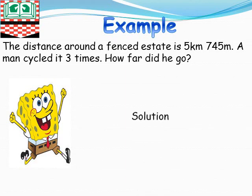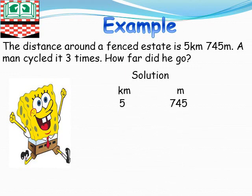Now, what are we supposed to do? Since the man cycled this fence three times. So, let's write our units first. Kilometers and meters. Write 500 kilometers, then 745 under meters. Then we multiply by three.